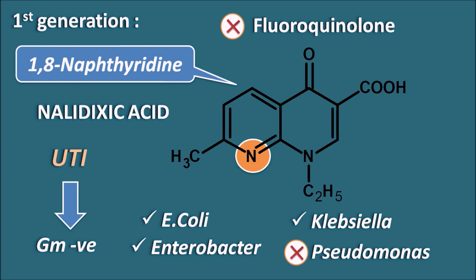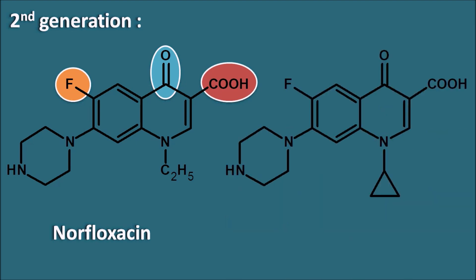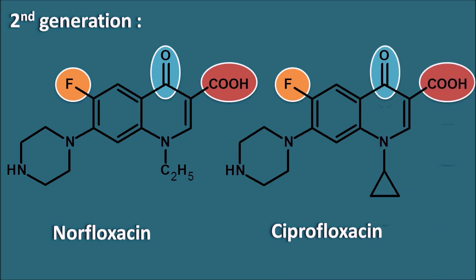Moving to the second generation fluoroquinolones, the first drug is norfloxacin — the first true fluoroquinolone, with a fluorine group at the sixth position, ketone at the fourth position, and carboxylic acid at the third position. Another second generation drug is ciprofloxacin, which has the same key groups. The difference between norfloxacin and ciprofloxacin is that norfloxacin has an ethyl group at the first position, whereas ciprofloxacin has a cyclopropyl group at the first position. These two drugs are structurally almost identical, differing only at the first position.